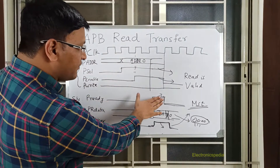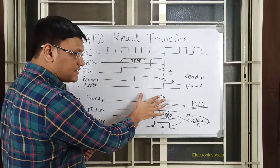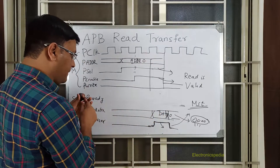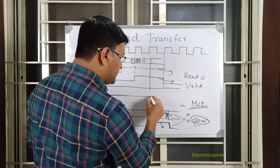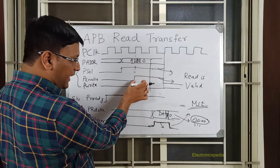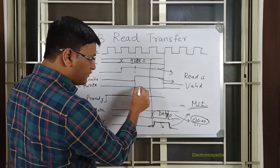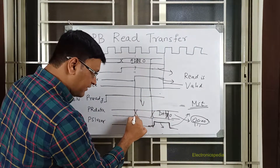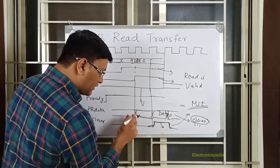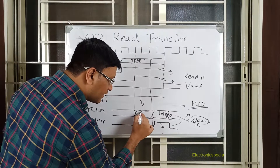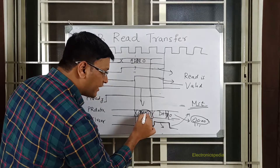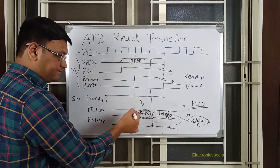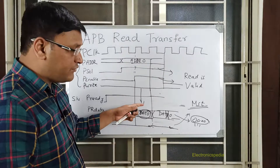If the slave is always ready, it can choose to assert PREADY always. That means as soon as PENABLE is high, in that very window itself my data is valid. So whatever data is returned by the slave during this particular window - this is my data - this will be considered as valid data, if the slave error response is not there.